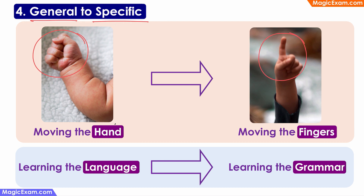So similarly, if you look at other types of development, for example language development, then the child will first learn the language, which is general in nature, and then move towards the specifics, such as the grammar in that language.